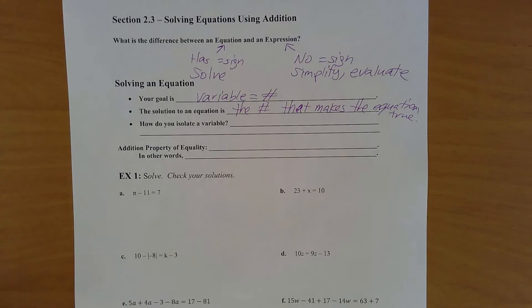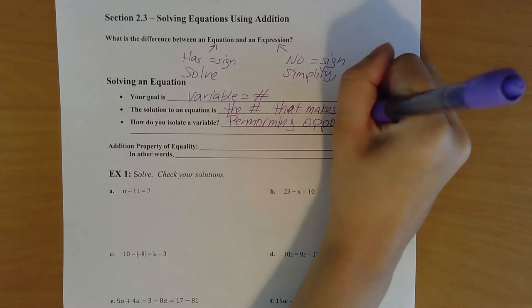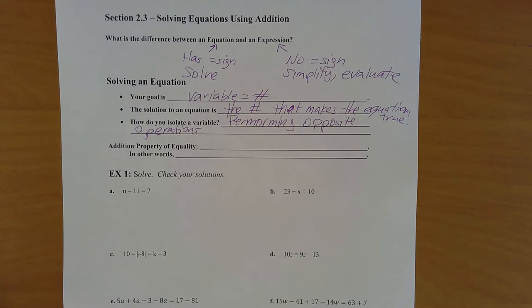So how do you isolate a variable? How do you get that variable by itself? In general, it's by performing opposite operations. You're going to see other stuff on the same side as the variable and you're going to manipulate things by doing the opposite operations. If you see addition, you're going to do subtraction; if you see multiplication, you're going to do division. Doing this helps you move things around and get rid of coefficients.